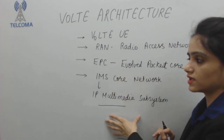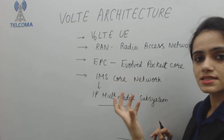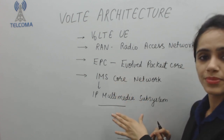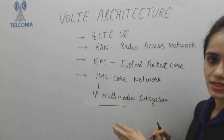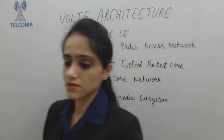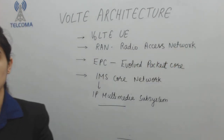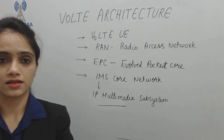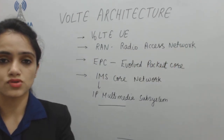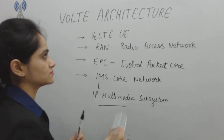These are the entities required in the complete Voice over LTE network architecture: first the UE, then the Radio Access Network, then the Evolved Packet Core, and the IMS Core Network — which is dedicated specifically for Voice over LTE processes. Let's start with the very first entity: the Voice over LTE User Equipment.